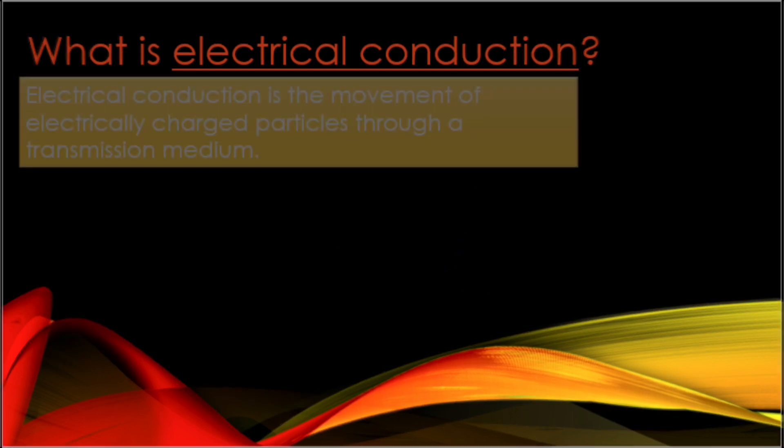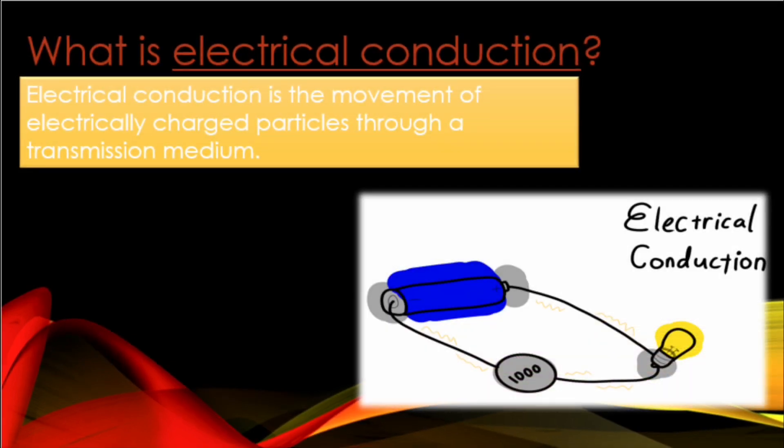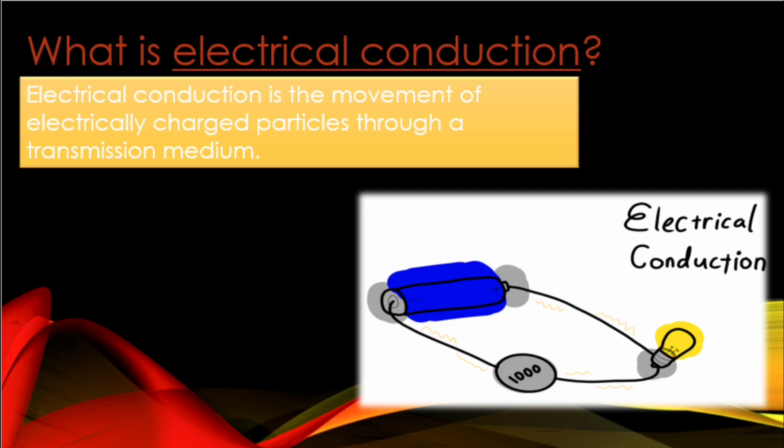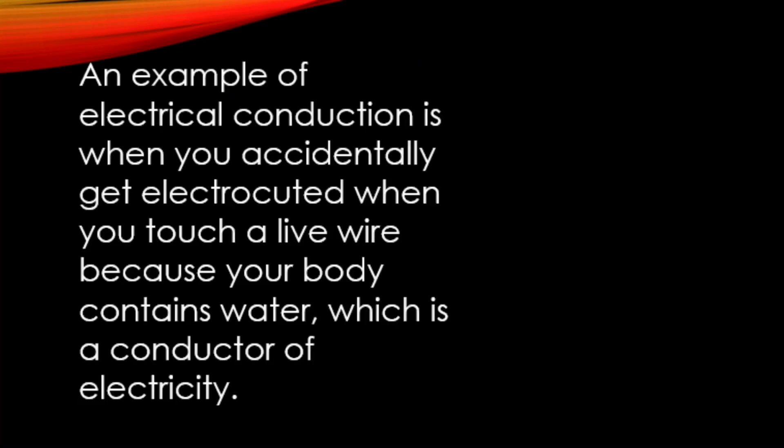What is electrical conduction? Electrical conduction is the movement of electrically charged particles through a transmission medium. An example of electrical conduction is when you accidentally get electrocuted when you touch a live wire because your body contains water, which is a conductor of electricity.